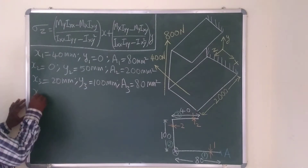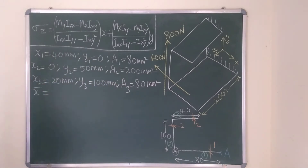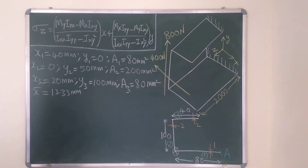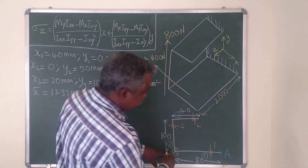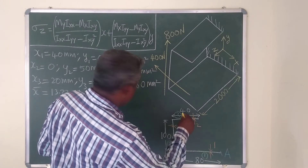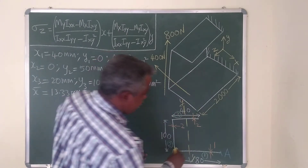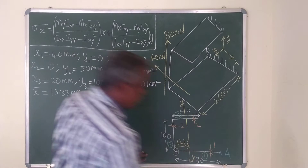Now, X-bar = (A1·X1 + A2·X2 + A3·X3) / (A1 + A2 + A3), which gives X-bar = 13.33 mm. So X-bar locates the position of the centroidal Y-axis — our YY axis is located at a distance of 13.33 mm to the right of the reference point.